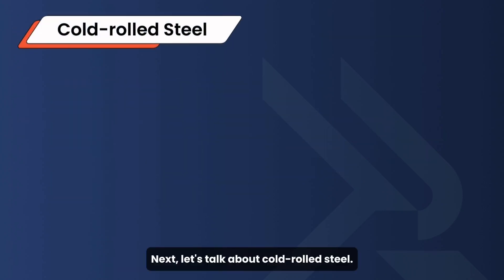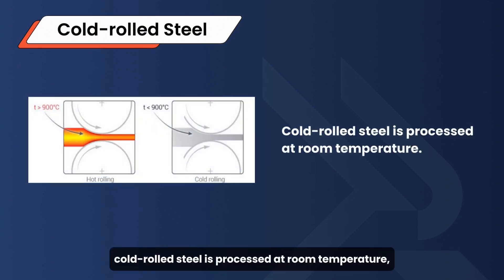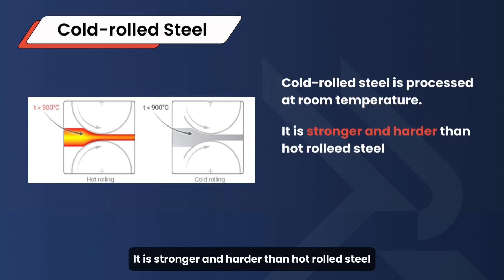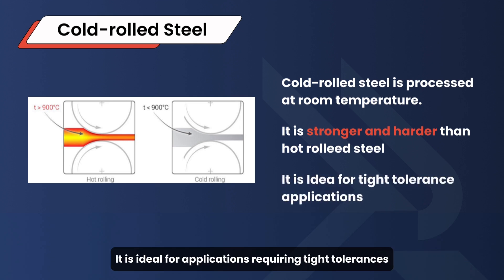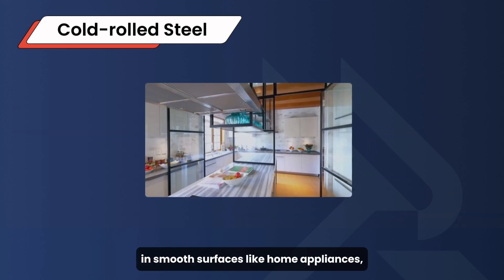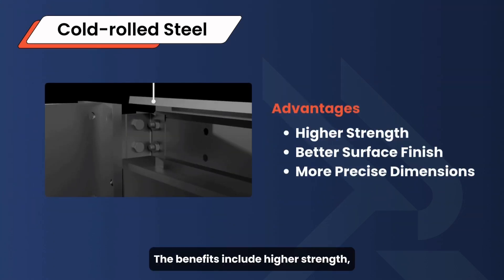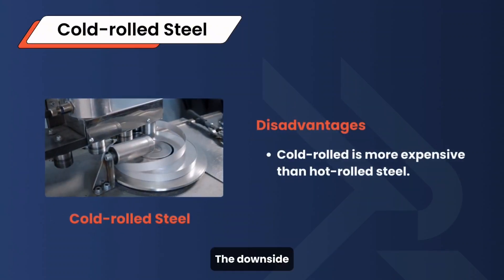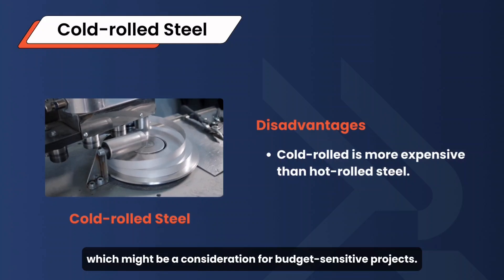Next, let's talk about cold rolled steel. Unlike hot rolled steel, cold rolled steel is processed at room temperature, resulting in a smoother finish and more precise dimensions. It is stronger and harder than hot rolled steel due to strain hardening during the cold rolling process. It is ideal for applications requiring tight tolerances and smooth surfaces like home appliances, automotive parts, and metal furniture. The benefits include higher strength, better surface finish, and more precise dimensions. The downside is that it is more expensive than hot rolled steel, which might be a consideration for budget-sensitive projects.